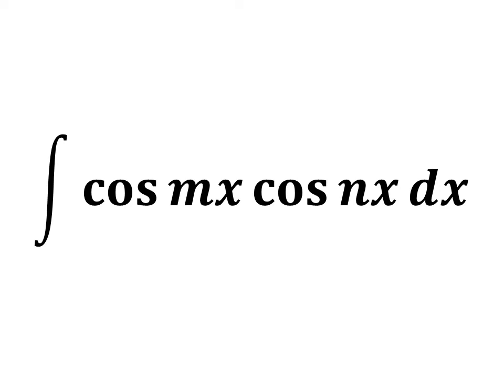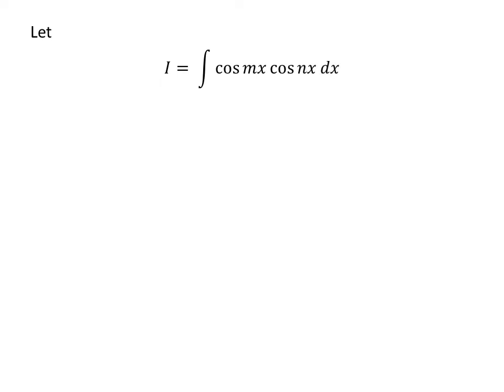In this video, we will learn to find the integral of the product of cosine of m times x and cosine of n times x. Let us assume I is equal to the integral of cosine of m times x times cosine of n times x with respect to x.